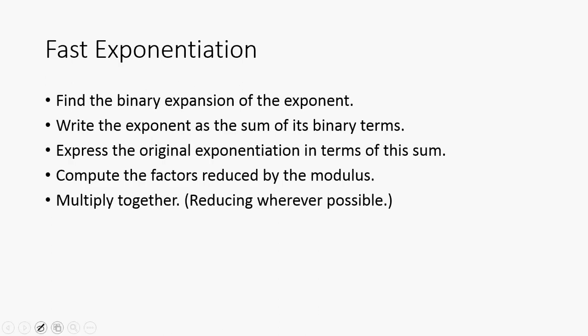So the last thing I'm going to discuss is the fast exponentiation method, which is most commonly used. So this is the algorithm in a nutshell. We find the binary expansion of the exponent. Then we write the exponent as the sum of its binary terms. Then we express the original exponentiation in terms of the sum. And then we compute the factors reduced by the modulus. And then we simply multiply the results together, reducing whenever possible.